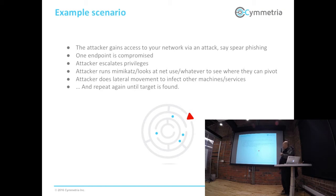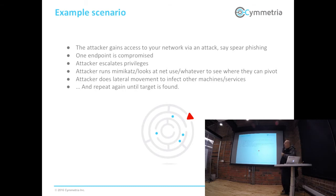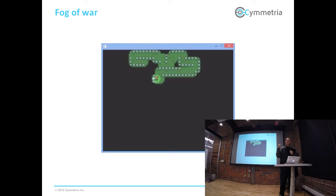That is exactly the attack scenario we're looking for. The attacker accesses the network, escalates privileges, runs Mimikatz, net use, cookies — whatever they can see — and follows the persistent path of the user. The user usually goes there, which means this is not an anomaly — it's just a path. They repeat again and again until they find the target and steal the data. Essentially, when they get access to your network, there is a fog of war. And the critical point is: when they collect intelligence, they collect our information. We control the information they make decisions by.